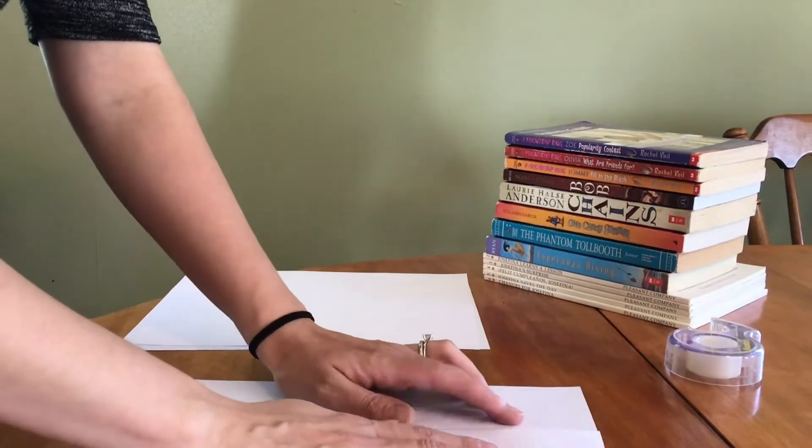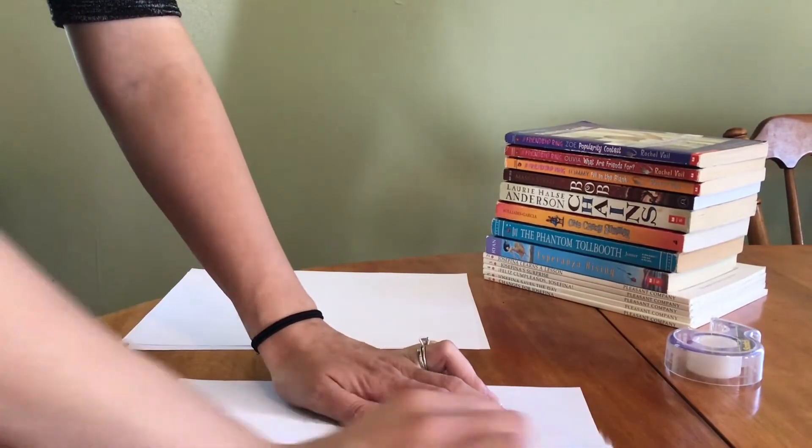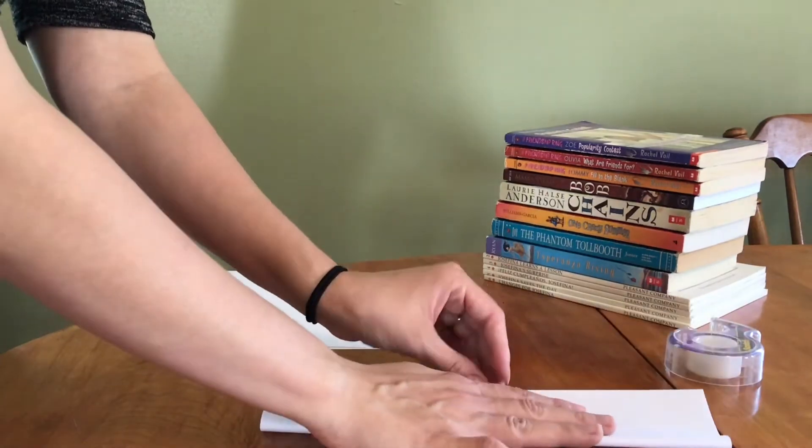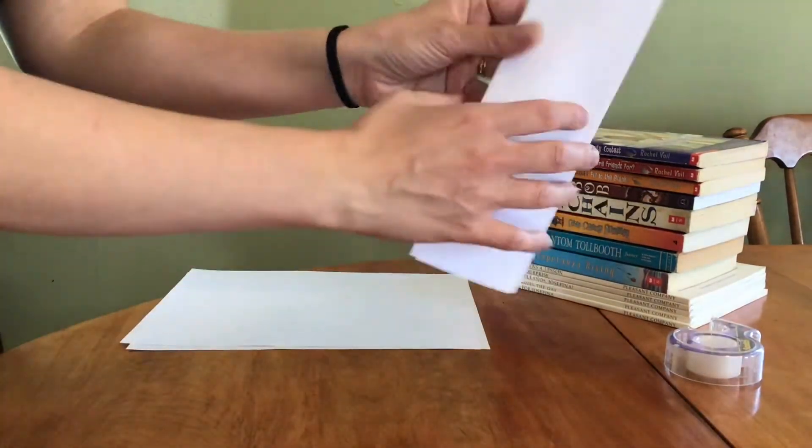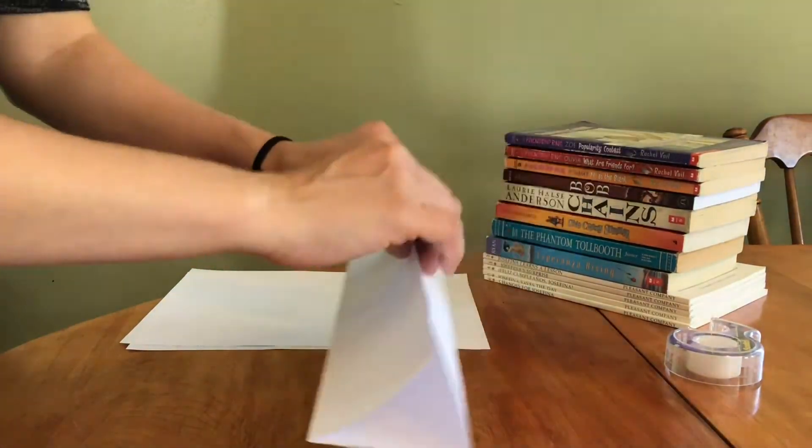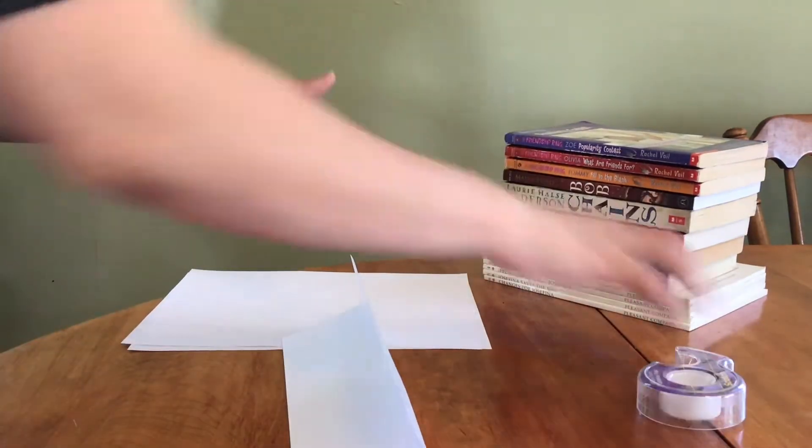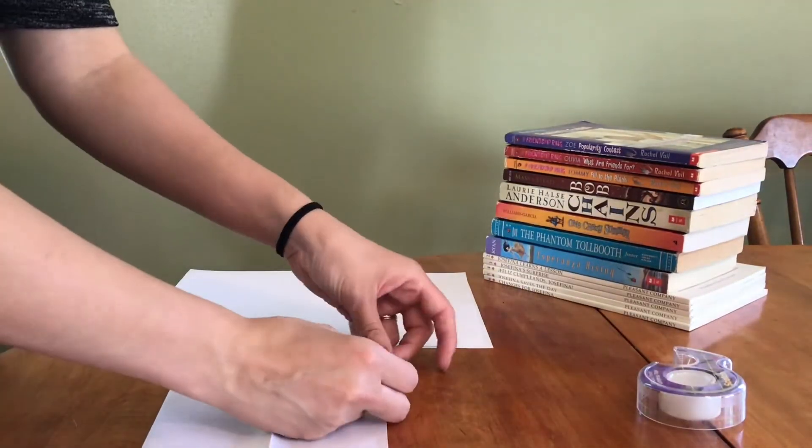Now we're going to make a triangle shaped column. Fold your paper long ways again about two-thirds of the way across the page. Then tape the other side and fold it until it meets the first side. Tape the two sides together.